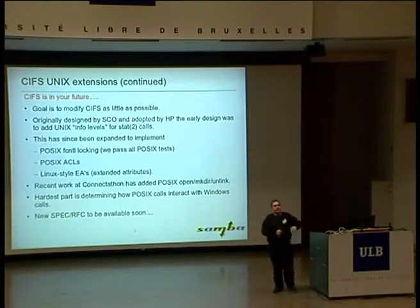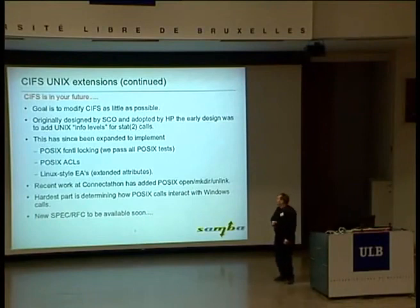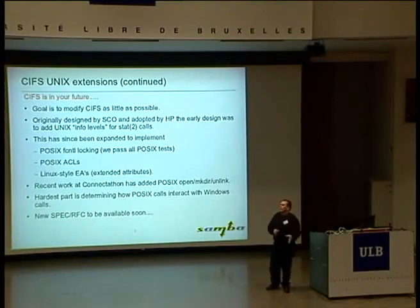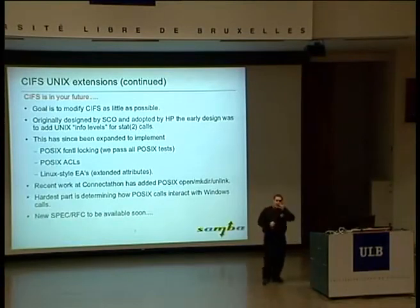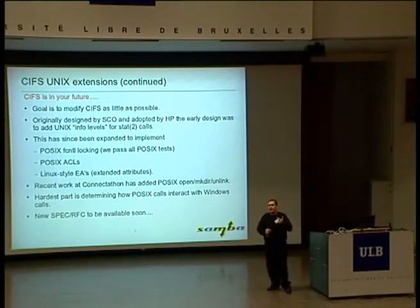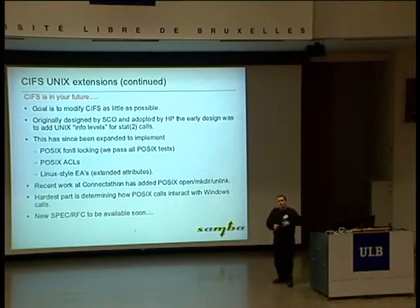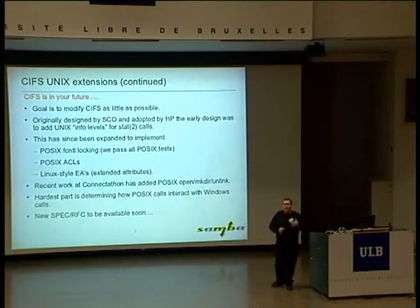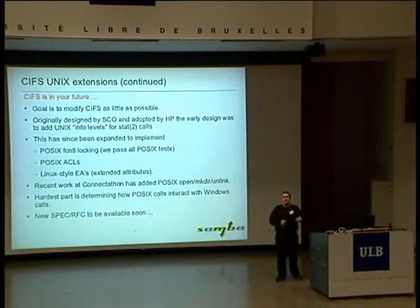The interesting things about designing CIFS extensions is working out how POSIX calls interact with Windows-specific calls when done simultaneously. The Apple guys complicated things by saying they want to do Windows calls and POSIX-style calls on the same connection, sometimes to the same file. Once we have the code up and running and document it as RFCs, I'm hoping we'll have four clients: Mac OS X, Linux, HP-UX, and a fourth one coming soon. Once those all support Unix extensions, I'm hoping the major NAS vendors — EMC and NetApp — will start implementing that on their server side.